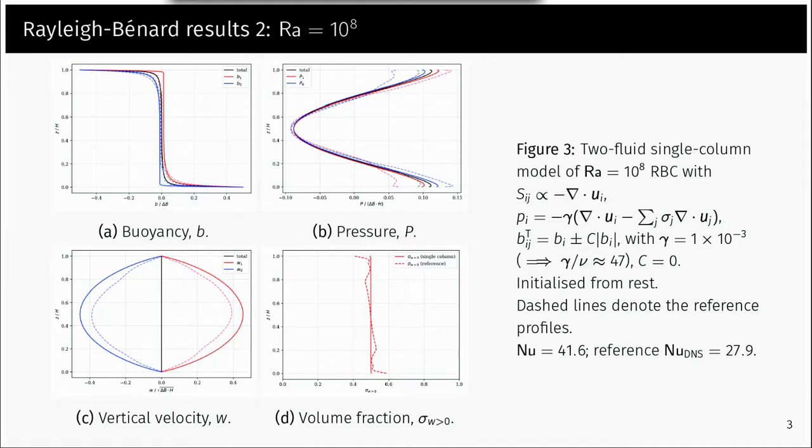At the higher Rayleigh number, the differences between the fluids are smaller due to the increased mixing between fluids. This is represented well by the two-fluid model. The increased Nusselt number for the increased Rayleigh number is also represented by the two-fluid model, with the Nusselt number of the two-fluid model as 41 and the reference as 27.9.